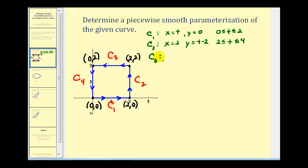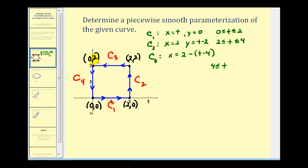For curve three, we go from the point (2, 2) to the point (0, 2). Now t has to start at four. We need to create a formula where t starts at four and x goes from two to zero. So if we let x equal two minus (t minus four), when t is four we subtract zero, when t is five we subtract one, and when t is six we subtract two, giving us zero. The equation for y stays at y equals two, so t is on the closed interval from four to six.